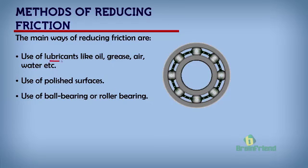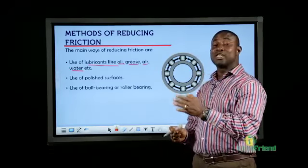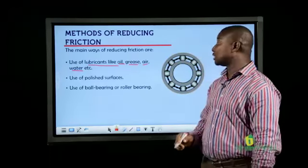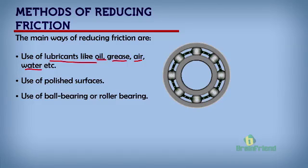Number one: we can use lubricants like oil, grease, air, or even water as lubricants between surfaces that are in motion to reduce the amount of friction between them. Number two: we can use polished surfaces instead of rough surfaces — we can make the surfaces smoother to reduce friction. Rough surfaces have greater friction between them when in contact than polished surfaces, so making surfaces smoother will reduce friction.